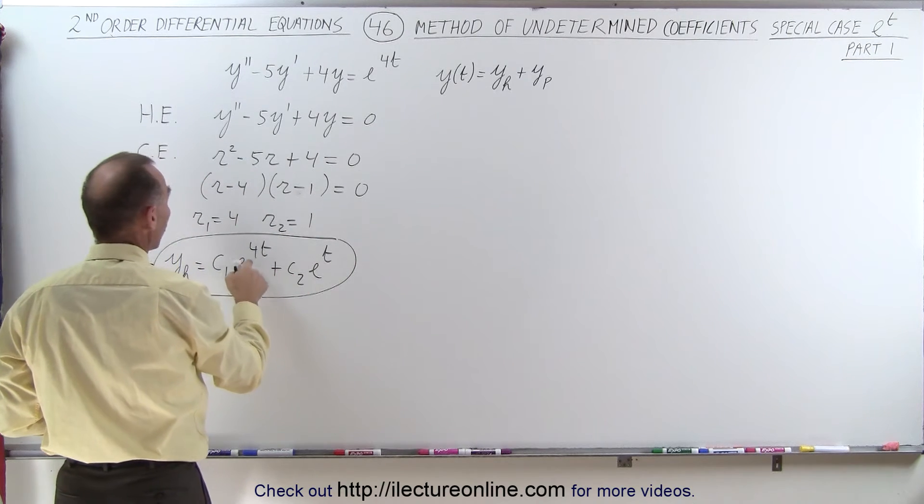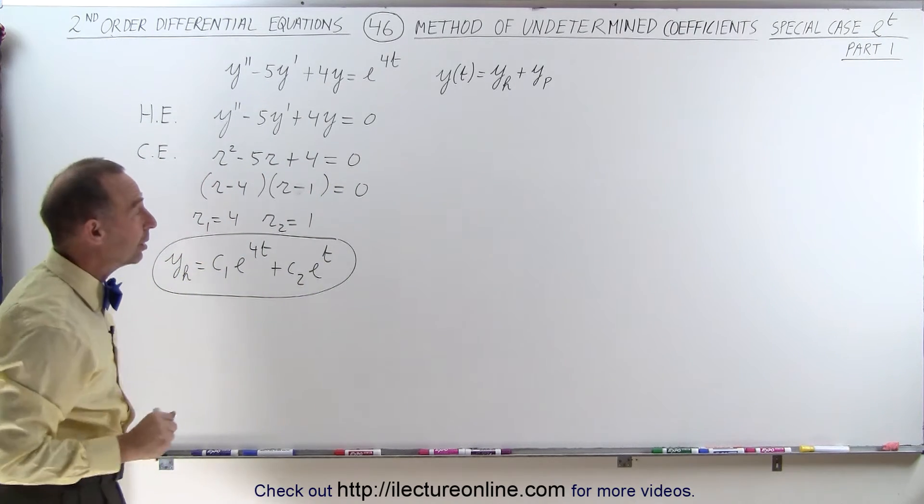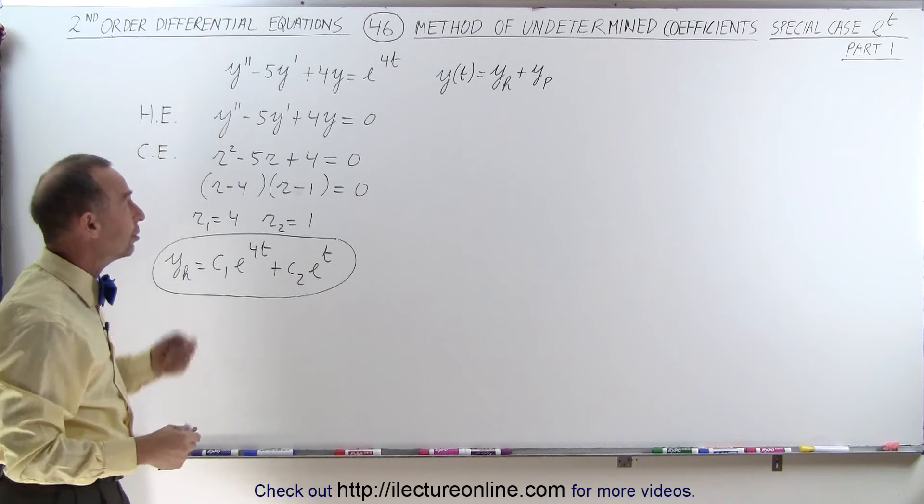So there's the homogeneous part of the solution. And notice that one of the exponents is equal to the function on the right side of the equation, and that is indeed a problem. But let's say we didn't know that, and we're just simply going to continue.